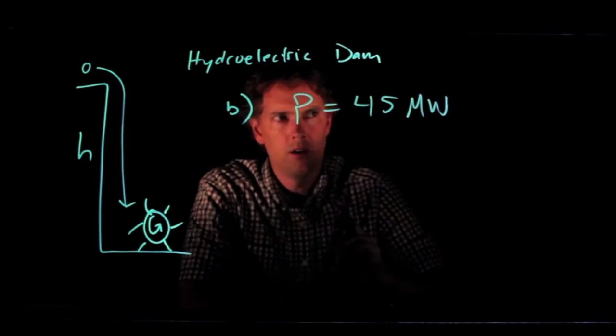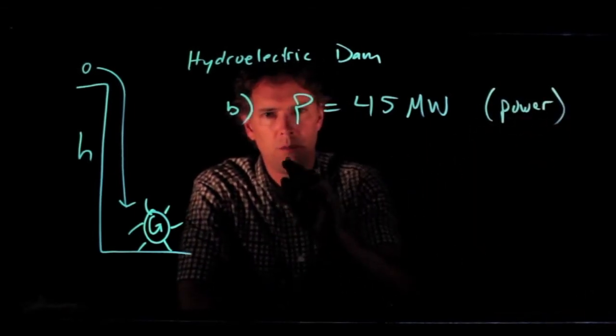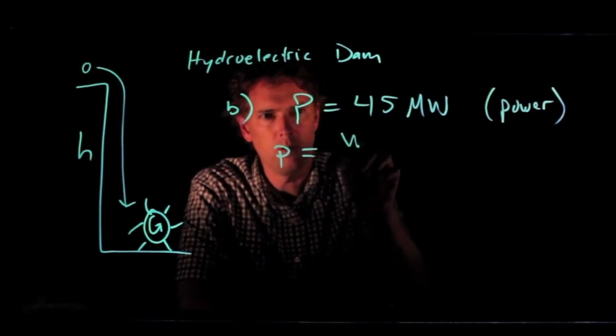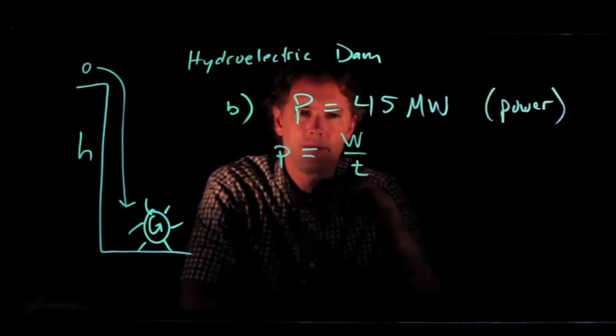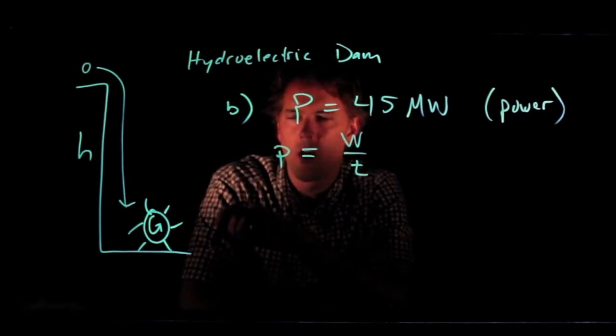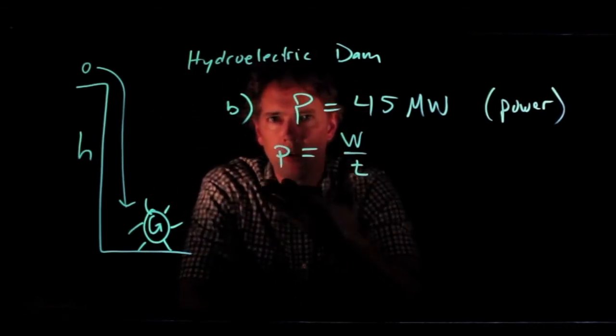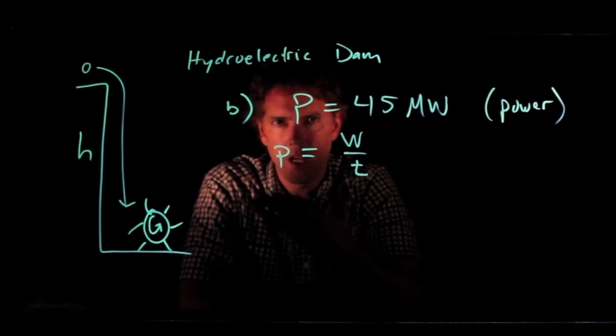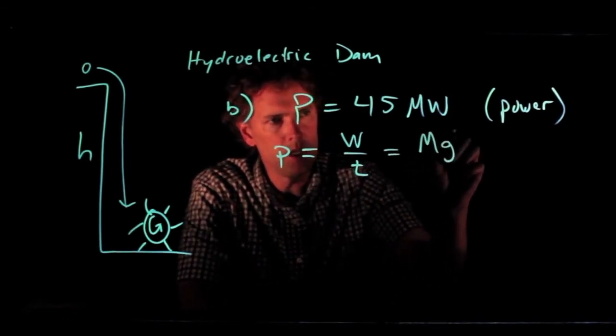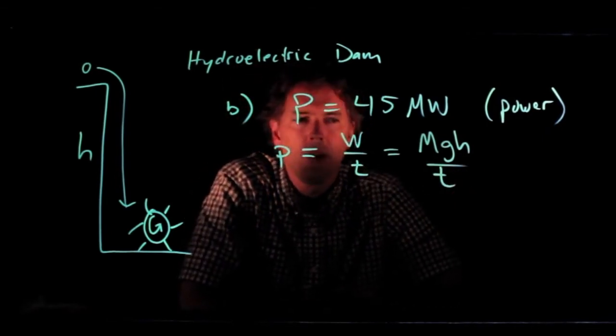Power, remember, is work over time. How much work did gravity do on the water falling? Well, there's a force mg, it went to height h, and so it's just the negative of the change in that potential energy. So it is mgh, and it's falling in a time t.